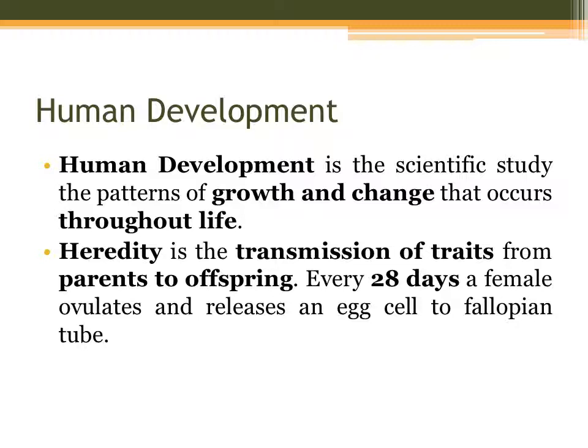Human development specifically starts during conception. Let's define what is heredity. Heredity is the transmission of traits from parents to offspring. Every 28 days a female ovulates and releases an egg cell to the fallopian tube. Heredity is also known as the passing of genes from parents to their children or offspring, and this happens during fertilization.